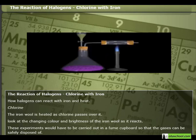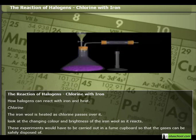How halogens can react with iron and heat — chlorine. The iron wool is heated as chlorine passes over it. Look at the change in colour and brightness of the iron wool as it reacts. These experiments would have to be carried out in a fume cupboard, so that the gases can be safely disposed of.